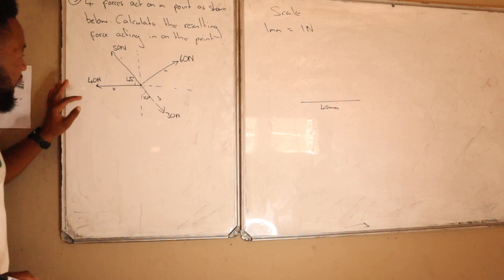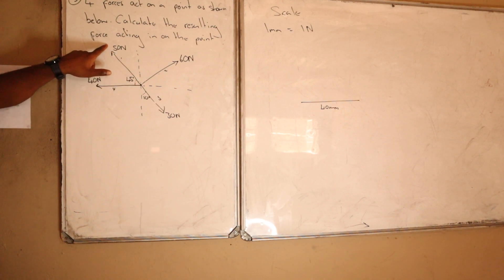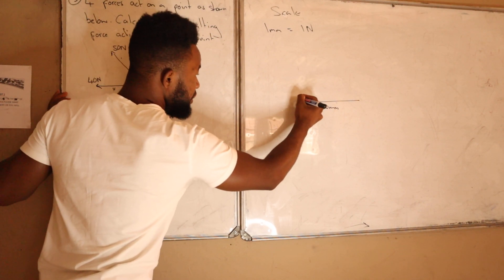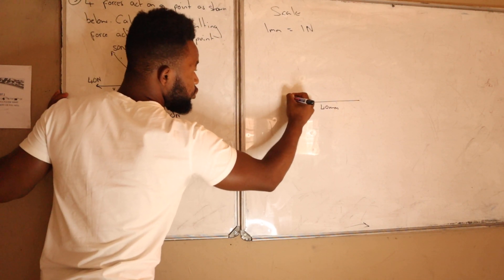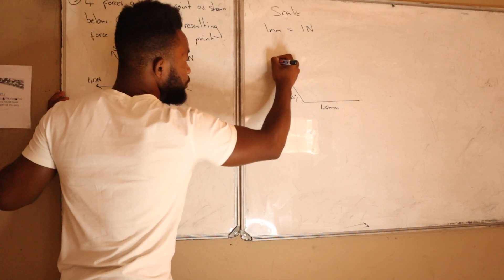If you check on the 40mm line, you also have a line which is forming 45 degrees, which is 15 Newtons. I measure my angle which is going to be 45 degrees, and then my line is going to be 15 millimeters.